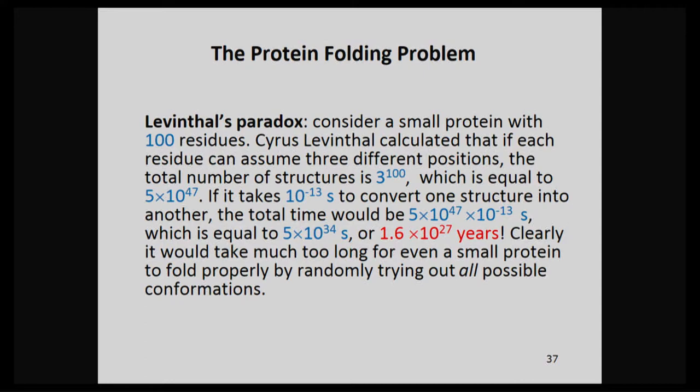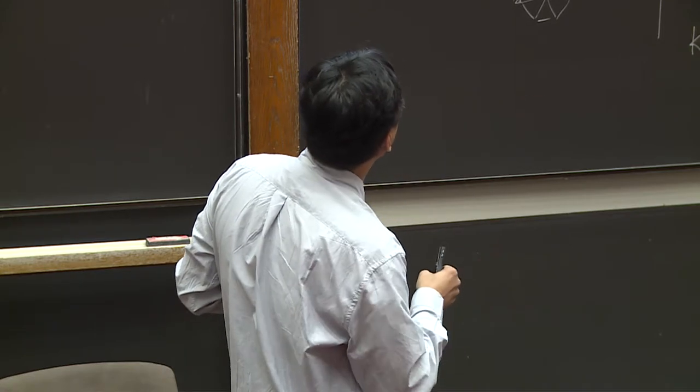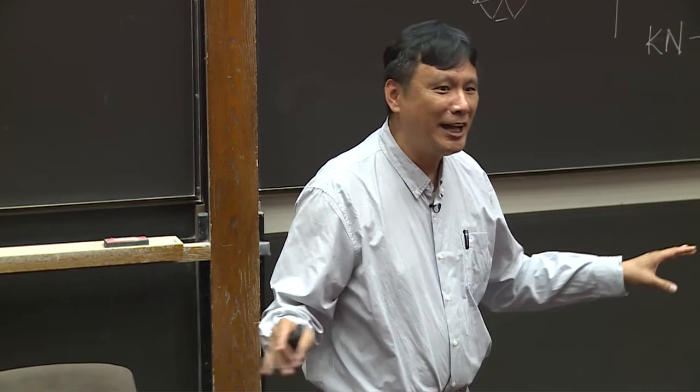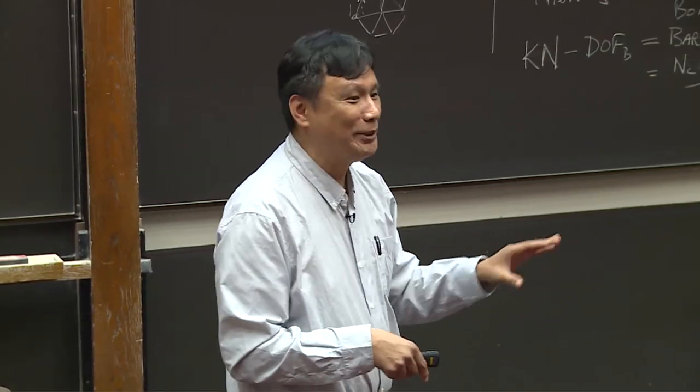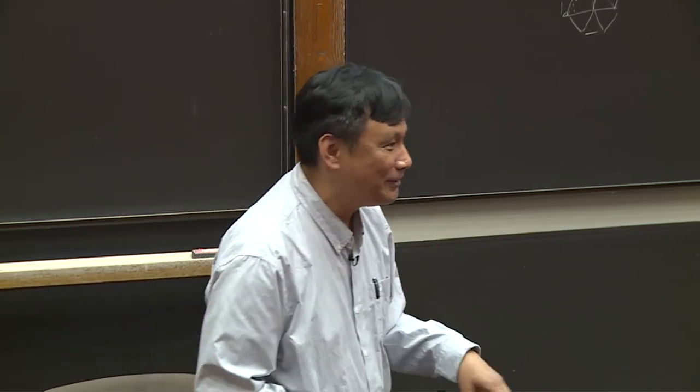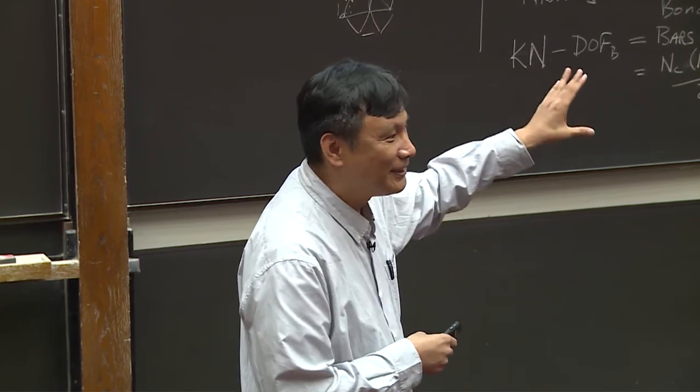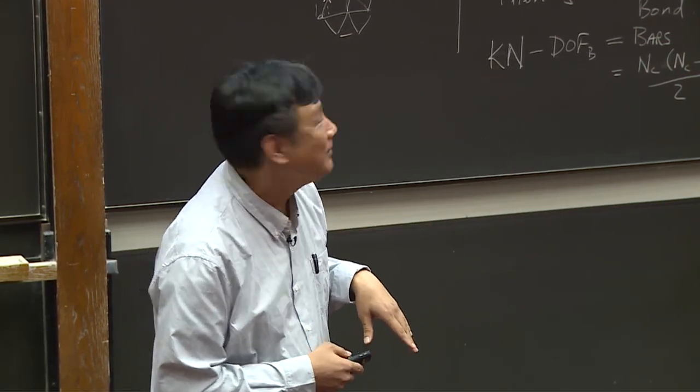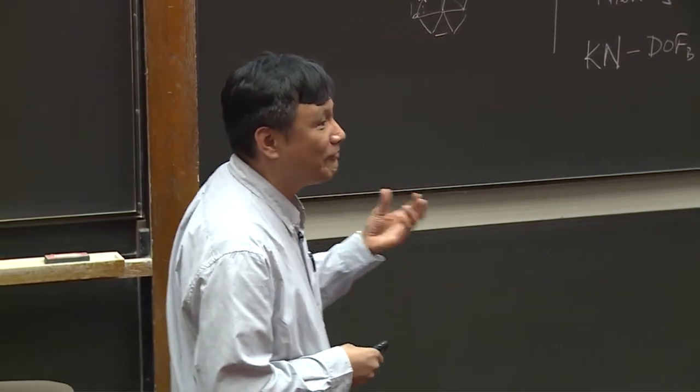Let's overestimate the conformational transition rate. For example, it could be 10 to the minus 13. This is overestimate. Then totally for one structure to start from random conformations and toward the native structure, it could take this time. It will be 5 times 10 to the 34 seconds. In other words, 1.6 times 10 to the 27 years. This is much, much longer than the entire time of our universe. So effectively it says protein will never fold. But of course we know this is not the case. Protein always folds every day if you are doing experiments. And therefore it's a paradox. There's something wrong in this paradox. Like a lot of paradox in mathematics, like the Zeno paradox.